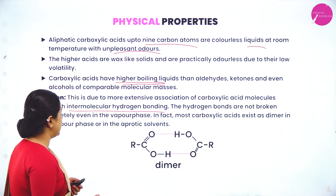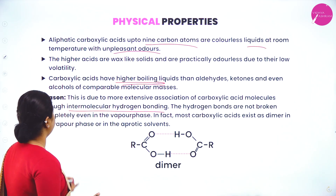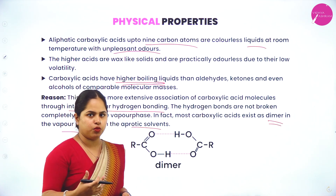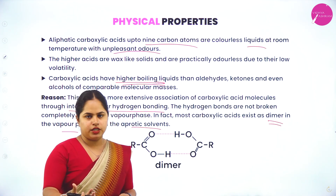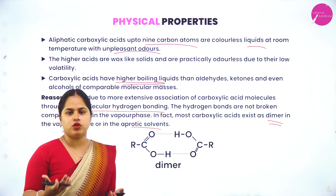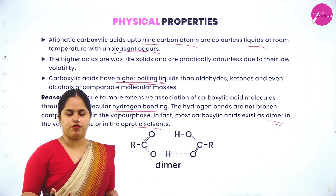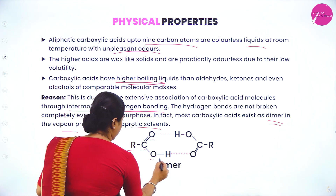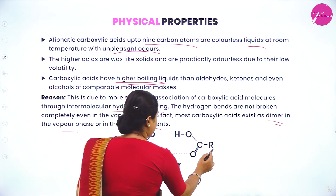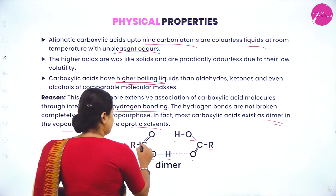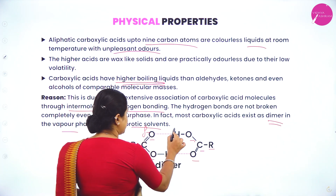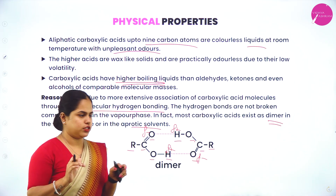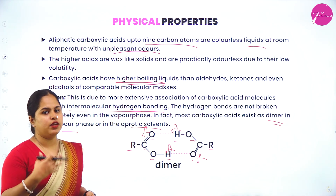The hydrogen bonds are not broken completely even in the vapor phase. In fact, most carboxylic acids exist as dimers in the vapor phase or in an aprotic solvent. In the dimer, one carboxylic acid molecule forms hydrogen bonds with another — oxygen has a negative charge and hydrogen a positive charge — creating intermolecular hydrogen bonds between two molecules. Even in the vapor phase this bond is not broken, which is why carboxylic acids have the highest boiling points.